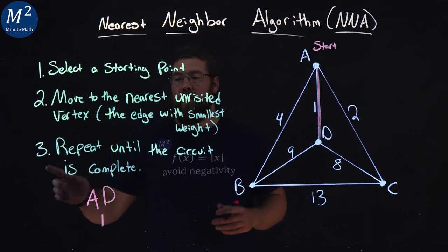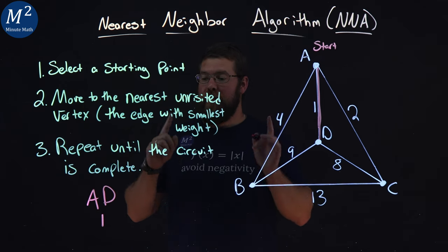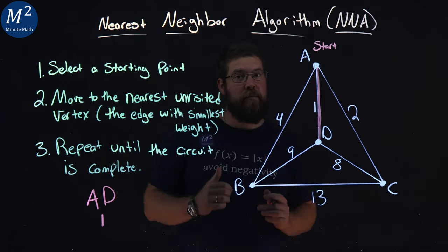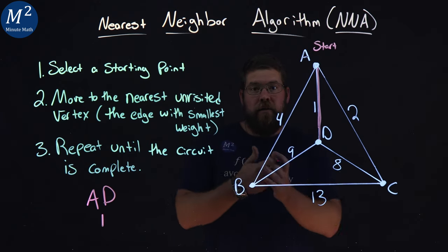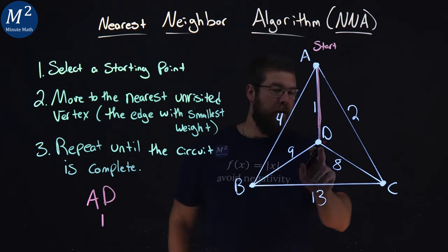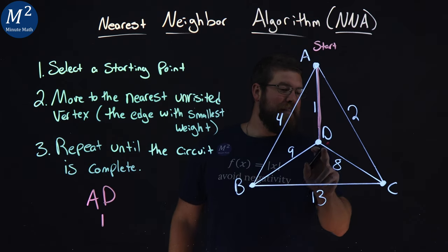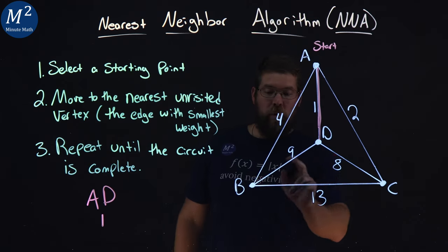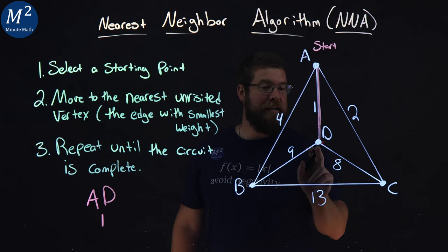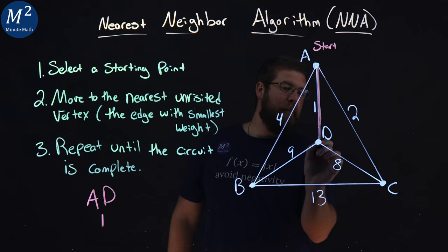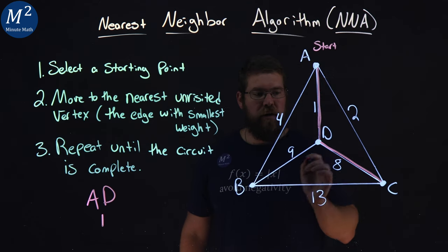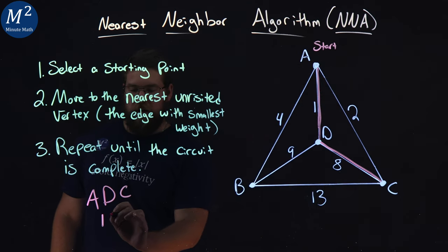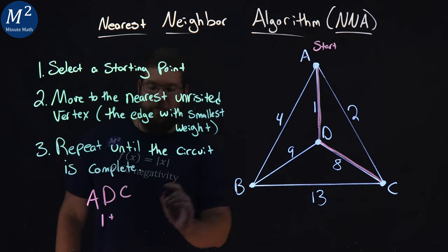And step three tells us to repeat this until a circuit is complete. So now we are at D. We have to go to the nearest neighbor, hence the name. D goes to, well, C or B. B has a weight of 9, C has a weight of 8. So I must go to C here as my next option. So we go to C, and that has a weight of 8.